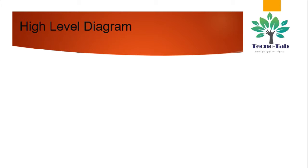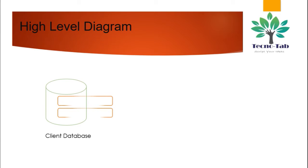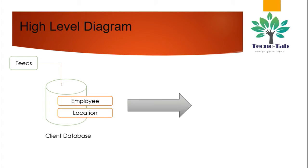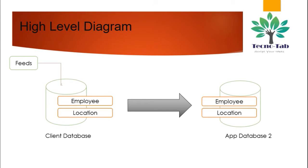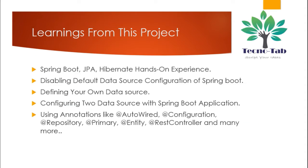We'll see the high-level diagram. We have a client database which has two tables — let's say the tables are Employee and Location. These tables are populated from XML feeds and saved in a client database. Both tables have to be migrated to an application database where they will be used for further processing and manipulation. Since this is a client database, we are not authorized to use it directly.